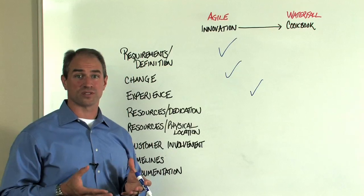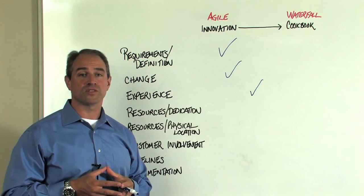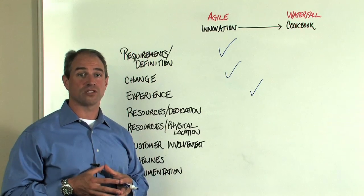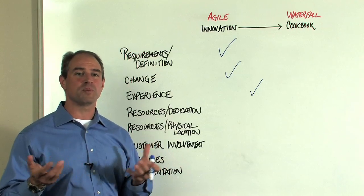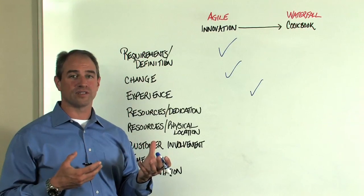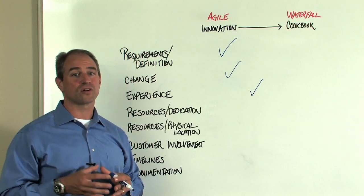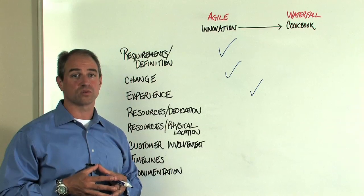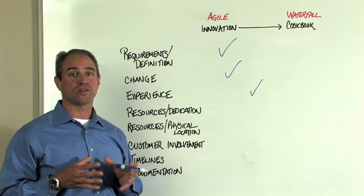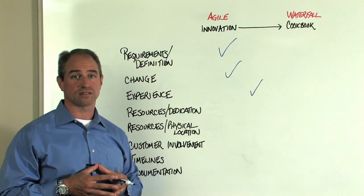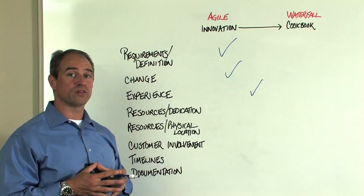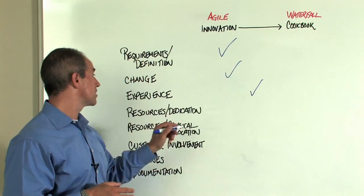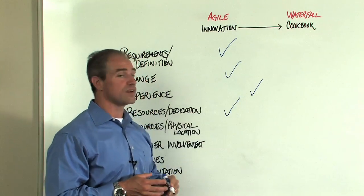The next area is resources. Do we have the right resources that are dedicated to this project? Or do we have some people that are maybe part-time or not fully dedicated to the project? It's critical in an agile project to make sure that your resources are dedicated during the times that we've committed to that project. If we have the right level of resources and we can commit them to the project, we'll be closer more towards an innovative type environment.